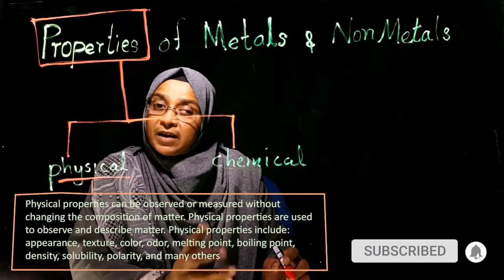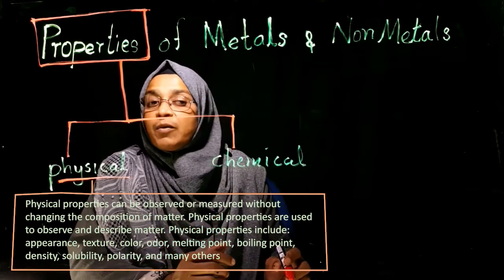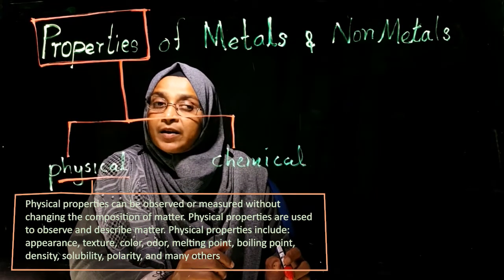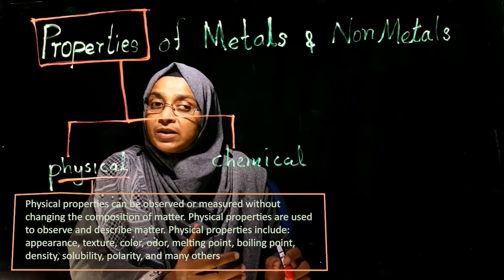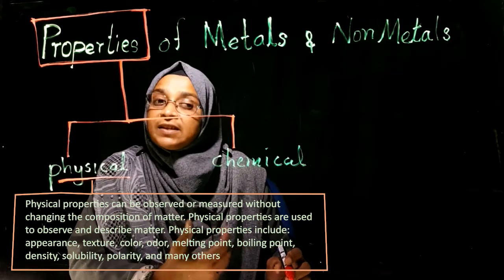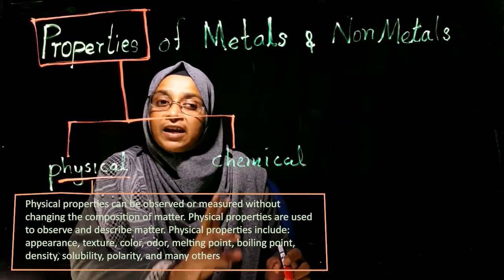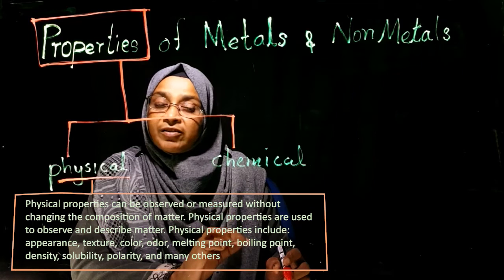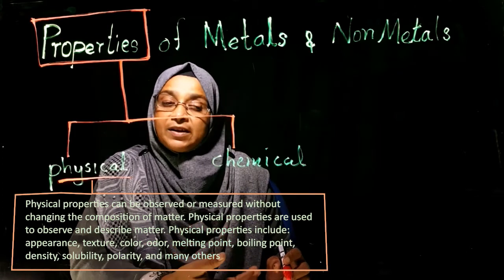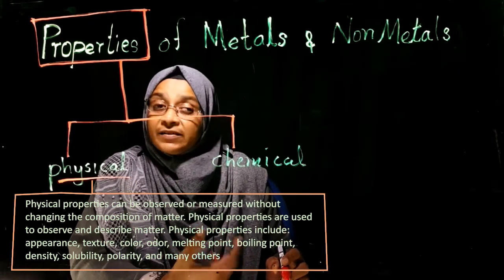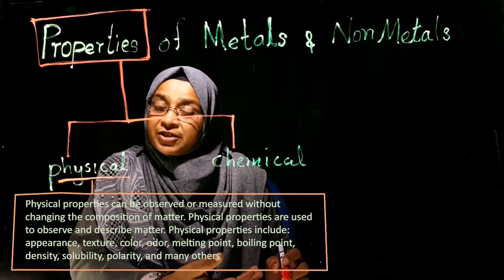Physical property means the properties that can be observed without making any changes in the composition of a substance. Physical properties of a metal or non-metal include the physical state — solid, liquid, or gas — as well as texture, appearance, color, odor, conductivity of electricity, conductivity of heat, density, malleability, and ductility.